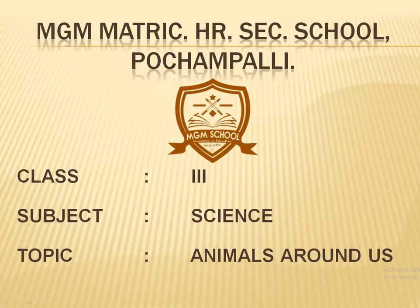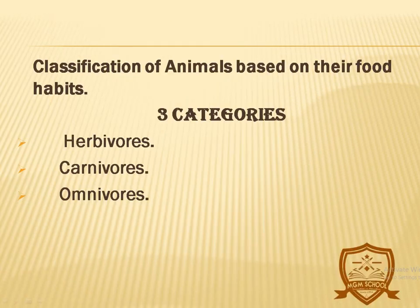Hello students, in science subject we are going to learn about animals around us. In that, the classification of animals based on their food habits. The animals are categorized into three. They are herbivorous, carnivorous and omnivorous.